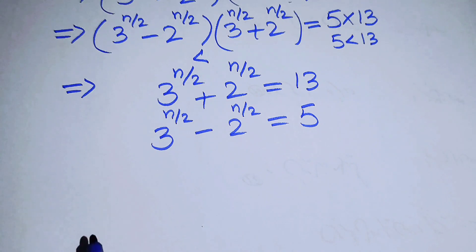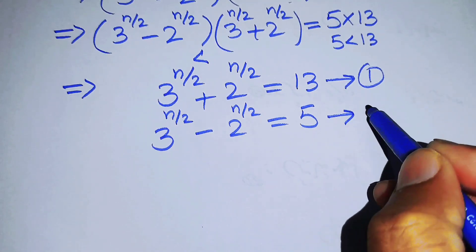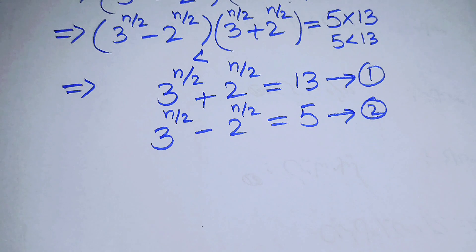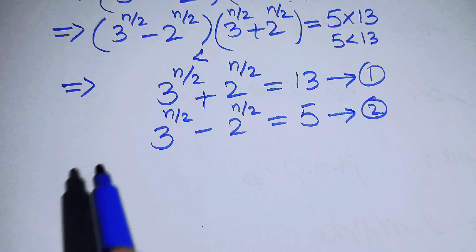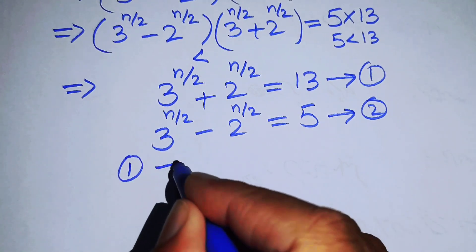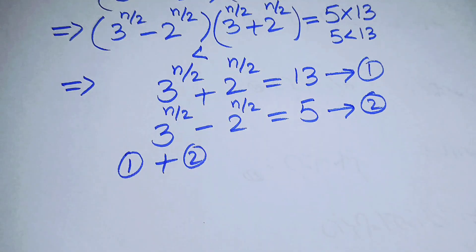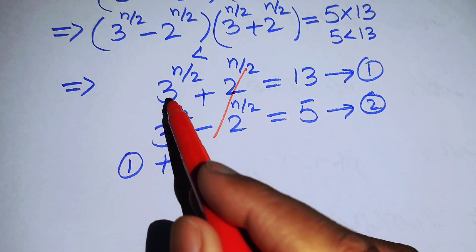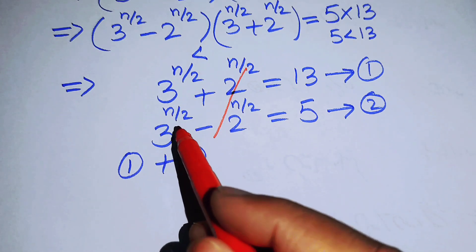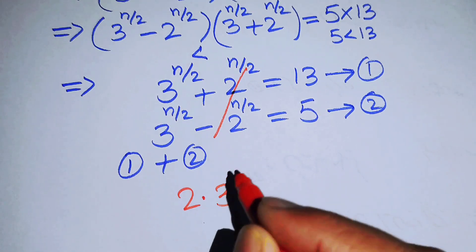We now have two equations — equation 1 and equation 2. To find the values of n we solve these two exponential equations. First, we add equation 1 and equation 2. When we add them, the minus and plus 2^(n/2) terms cancel, and we get two times 3 to the power of n over 2.